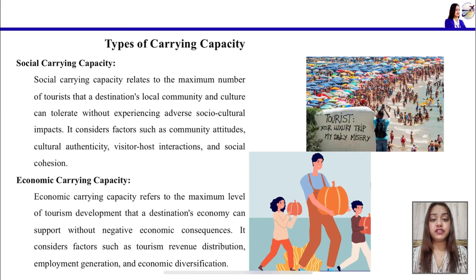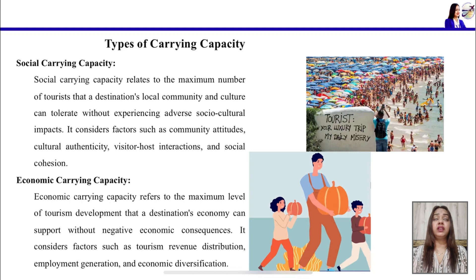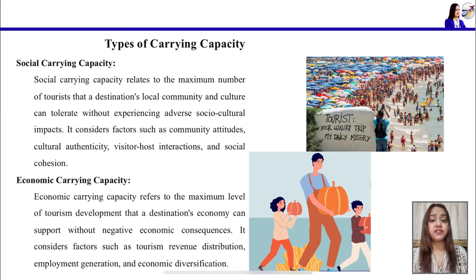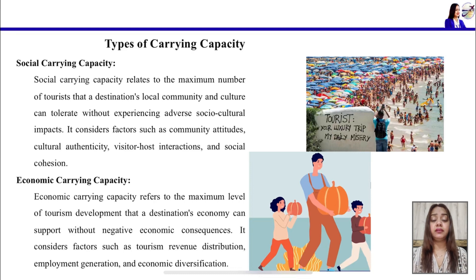To check social carrying capacity, there are factors like community attitudes — the behavior and attitude of communities — the authenticity of the culture and whether it is being commodified as per tourist demand, how the visitor and host are interacting, and the social cohesion — whether they are accepting each other. These are the factors considered when checking social tourism carrying capacity.